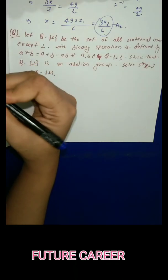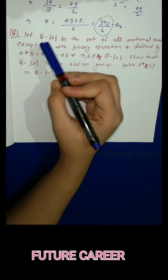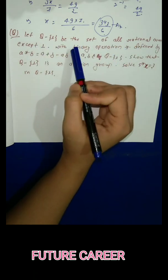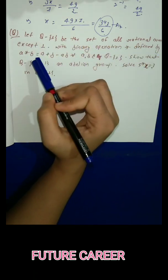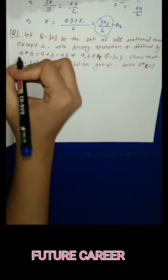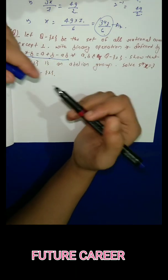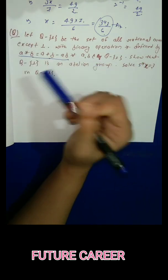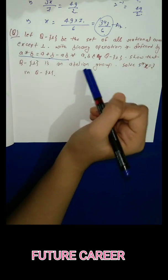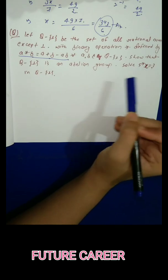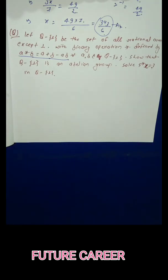The given question: let Q-{1} be the set of all rational numbers except one, with binary operation star defined by a★b = a+b-ab for all a,b belonging to Q-{1}, so that Q-{1} is an abelian group. Solve 5★x = 3 in Q-{1}. Now for an abelian group we have to satisfy 5 properties.